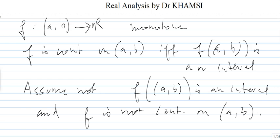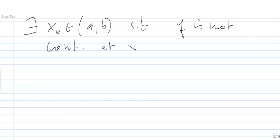So in this case, there exists x0 in (a,b) such that F is not continuous at x0. In this case, we know that the limit from what we did before, the last two examples...